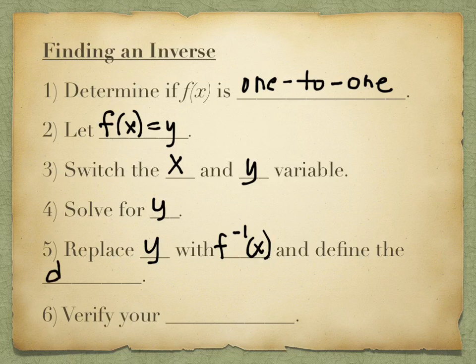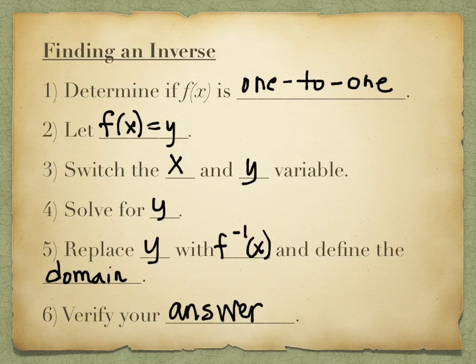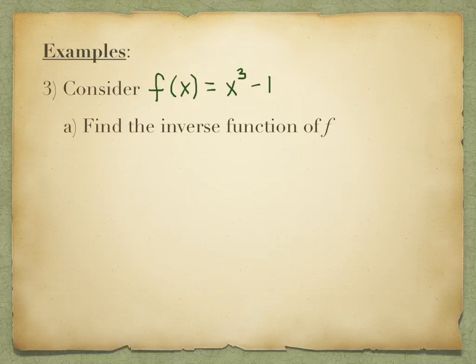Then you define the domain. The last thing you do is verify your answer — you could verify it graphically or analytically. I'm not going to ask you to verify and show me your verification, but this is one of those things where you have the opportunity to check your work even if it's an even answer. You don't need the back of the book — you could verify it for yourself. So we have this equation: f of x equals x cubed minus 1.